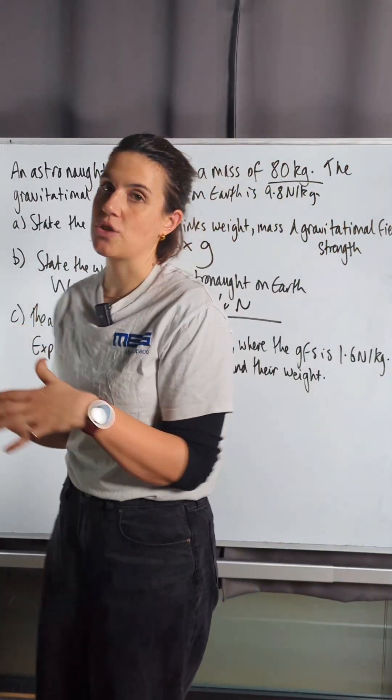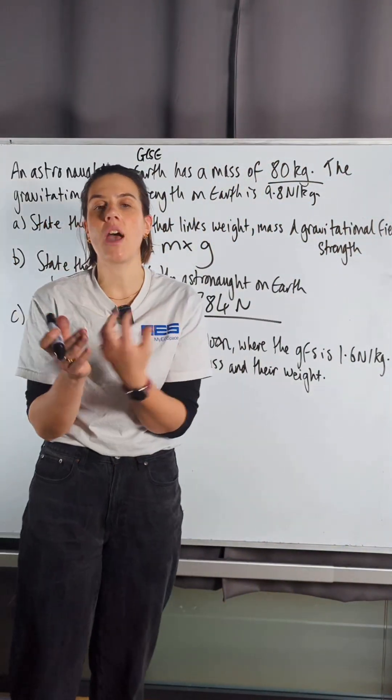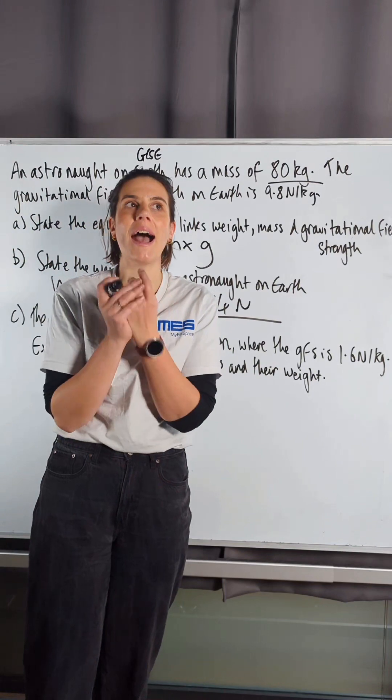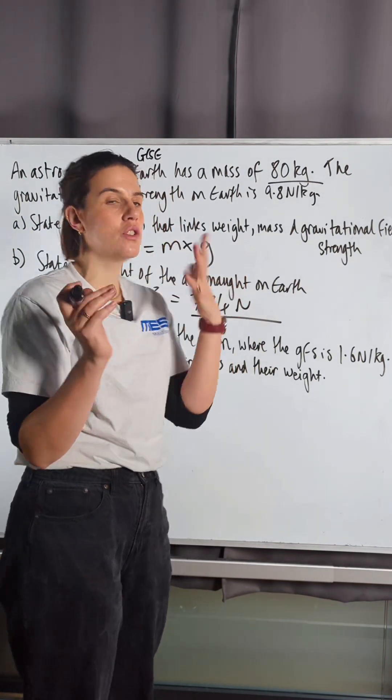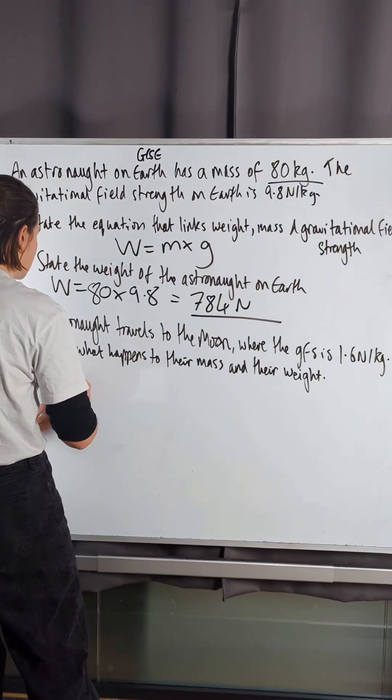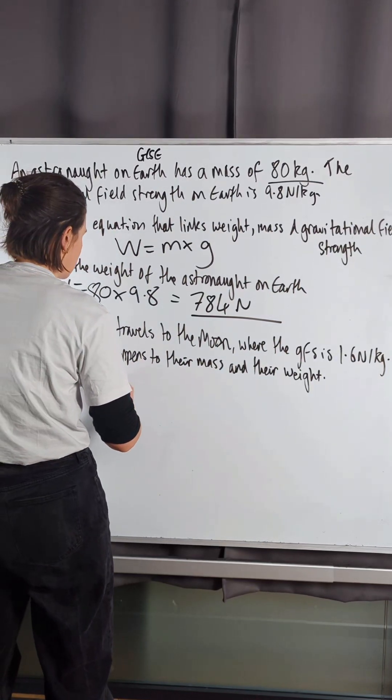So, the mass of the astronaut is about the amount of matter that they are made up of, okay. It's like the number of atoms in the astronaut. That hasn't changed just because they've gone to the moon. So, their mass stays the same.